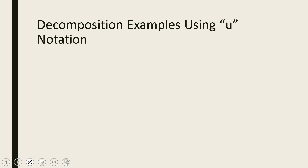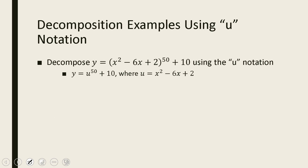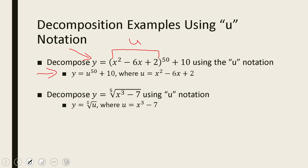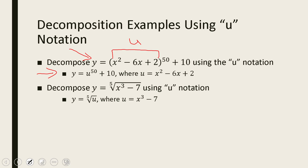Let's practice decomposing using u-notation. For y equals (x² minus 6x plus 2)⁵⁰ plus 10, we make the complicated inside part u, so y equals u⁵⁰ plus 10 where u equals x² minus 6x plus 2. Another example: y equals the fifth root of (x³ minus 7). We let u equal x³ minus 7, so y equals the fifth root of u.